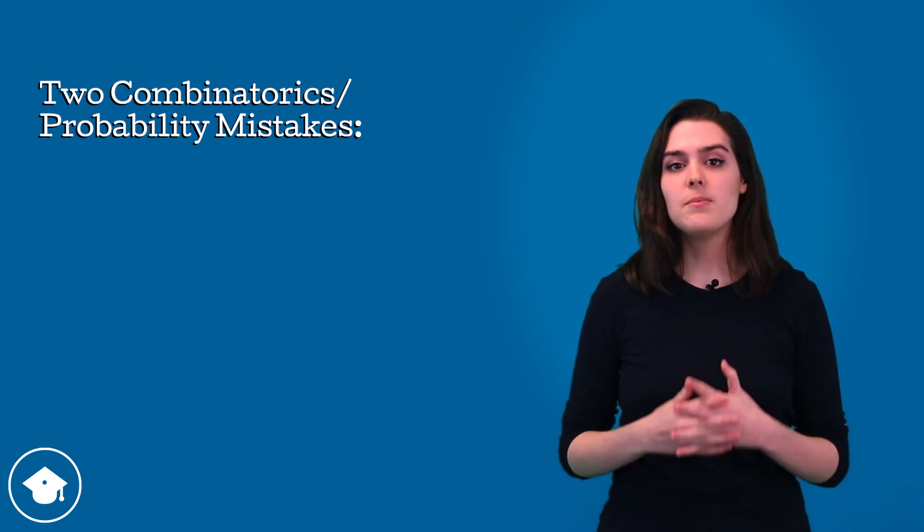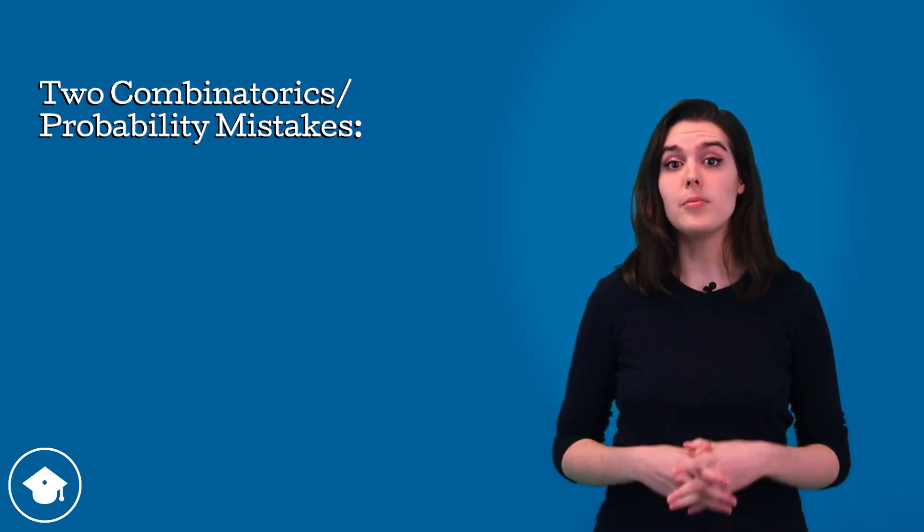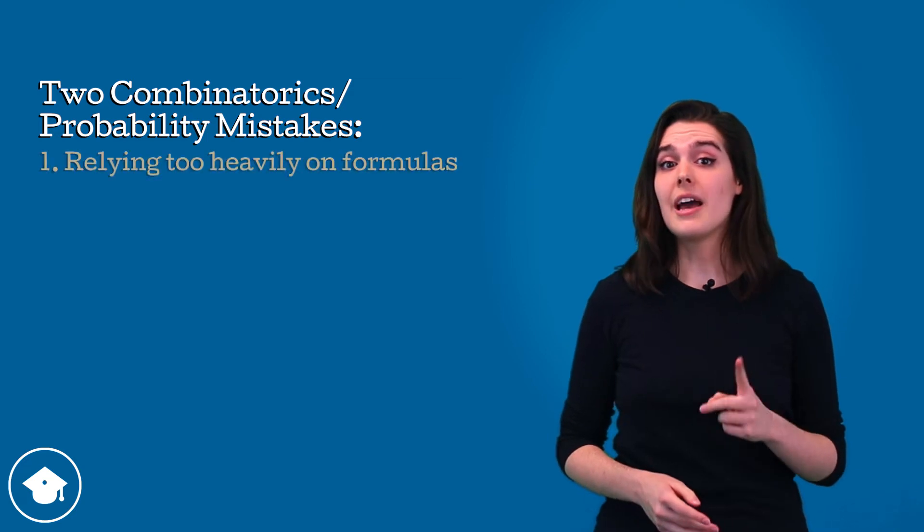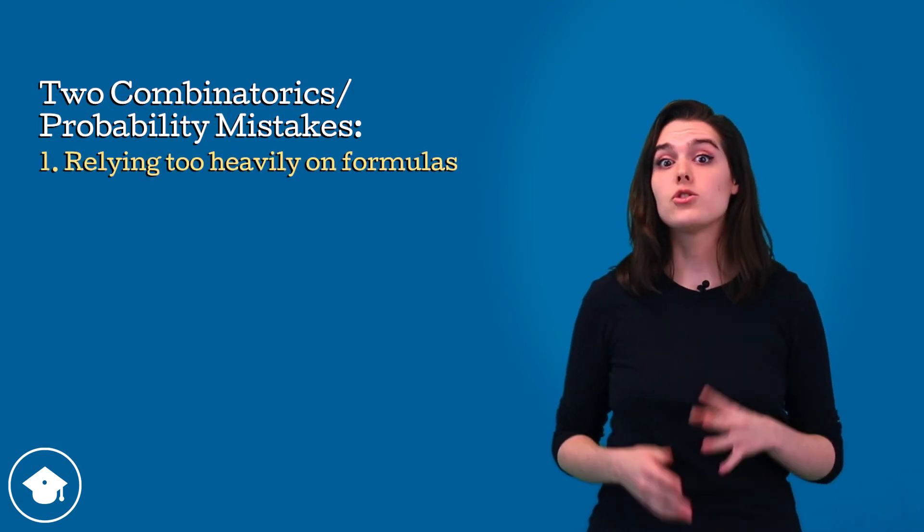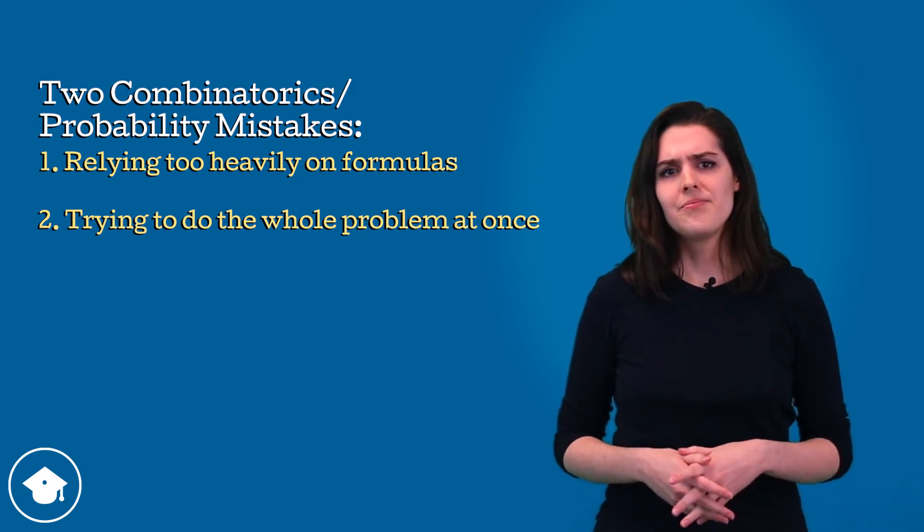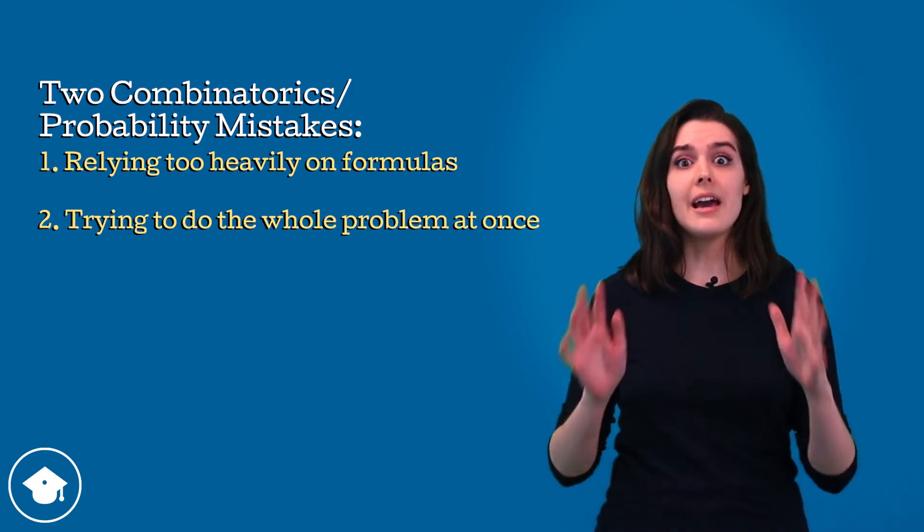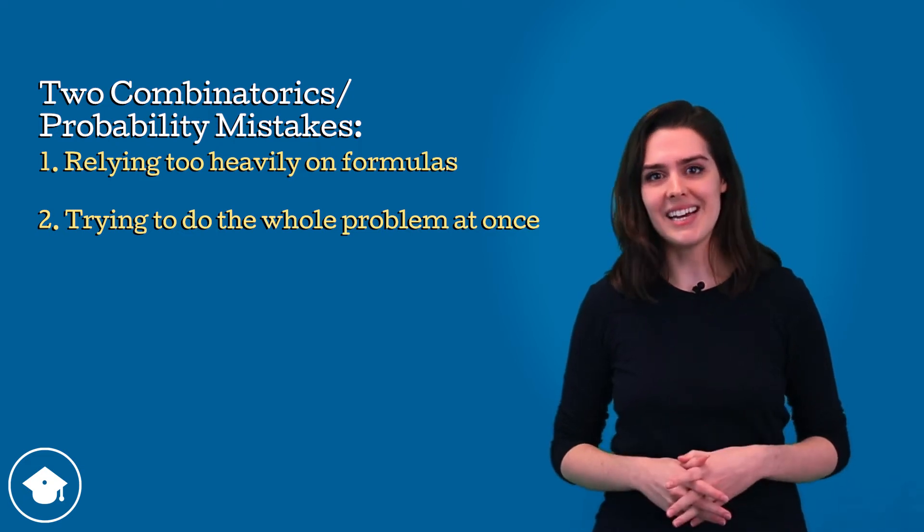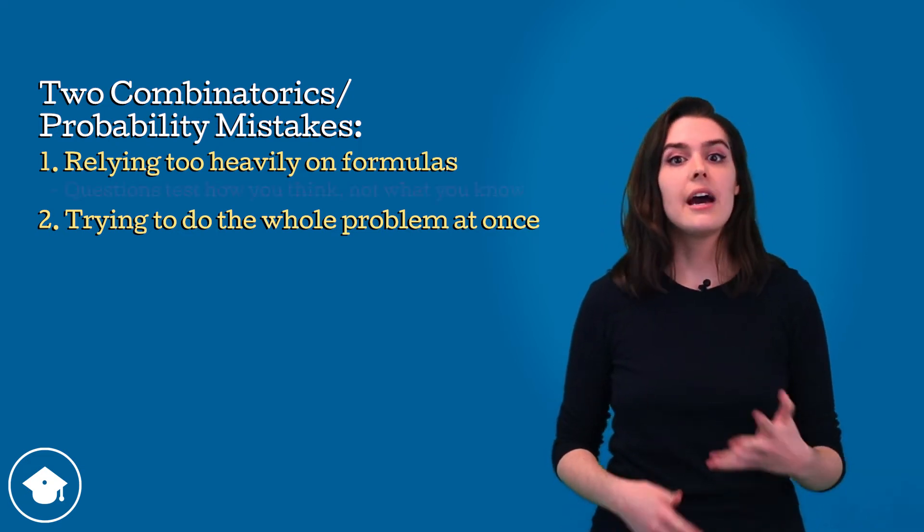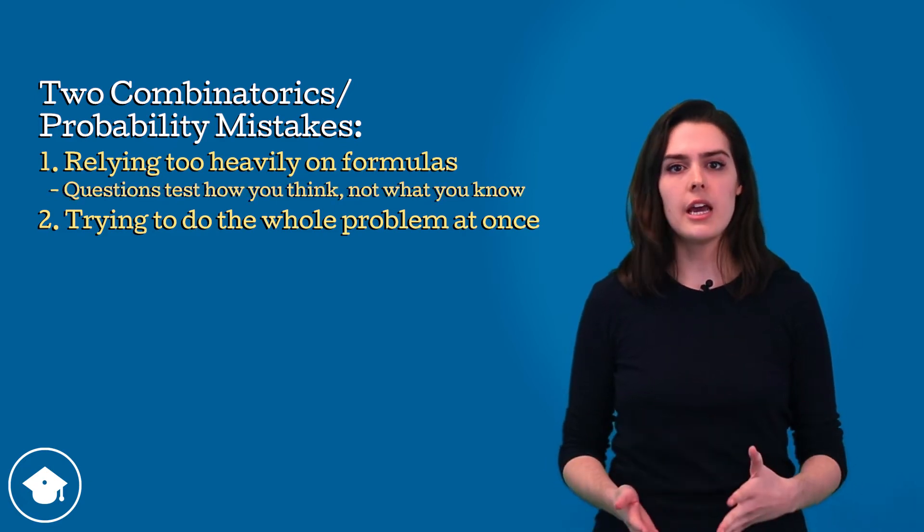All right, so there are two huge mistakes that I see people making on combinatorics and probability problems, and these mistakes go hand in hand. The first mistake is relying too heavily on formulas, and the second mistake is trying to do the whole problem at once. So we'll start with the first mistake. As is true of literally every other question type on this test, these questions aren't testing whether or not you know stuff. They're testing how you think, your logical reasoning.